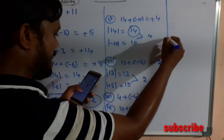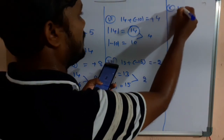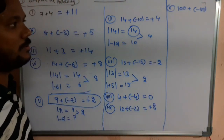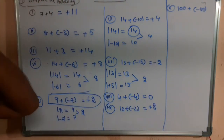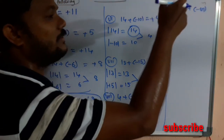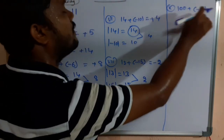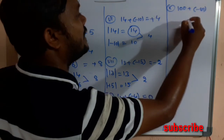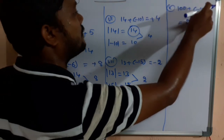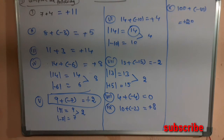The tenth question is 100 + (-80). Like or unlike? Unlike. For unlike integers we take the subtraction — the difference between 100 and 80 is 20. Which number has the greater value? 100. Since 100 is positive, the answer is +20.